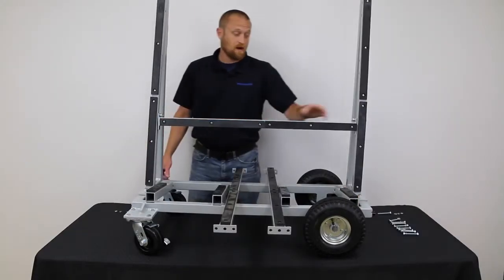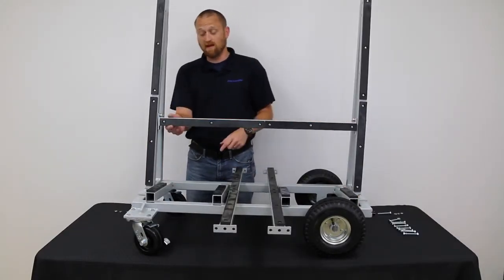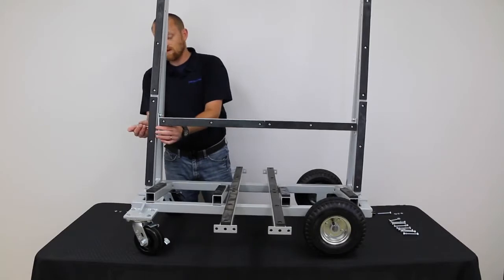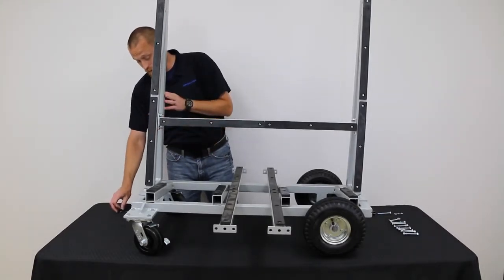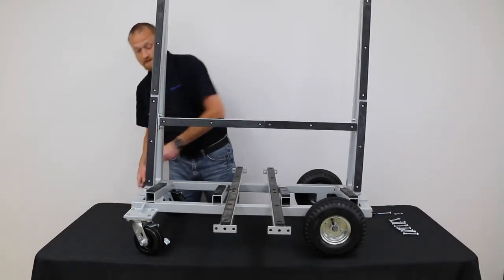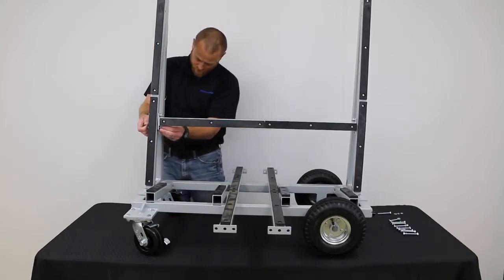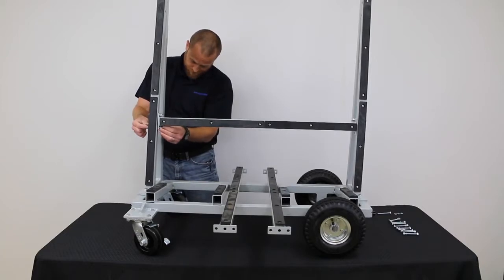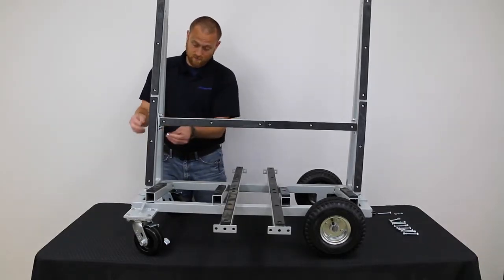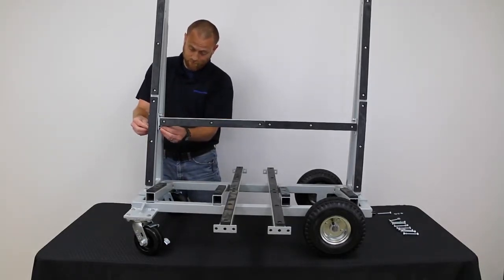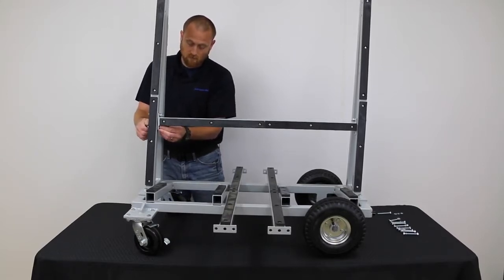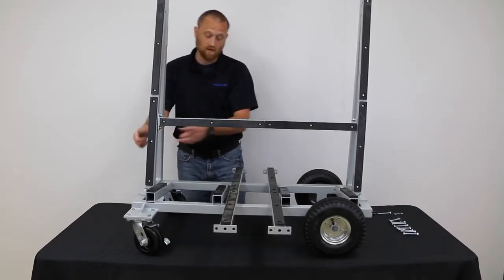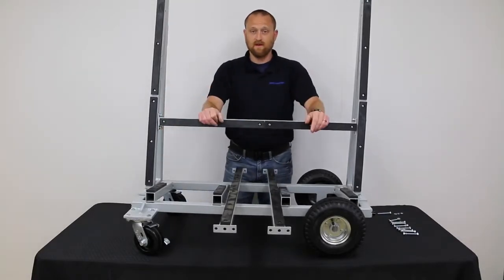Once the top hardware for the cross brace has been inserted and left finger tight, insert the bottom bolt all the way through the hole on the upright and on the cross brace. Then place your washer, your lock washer, and your nut on the remaining bolt. Making sure to leave all of this hardware for every single cross brace finger tight until complete.